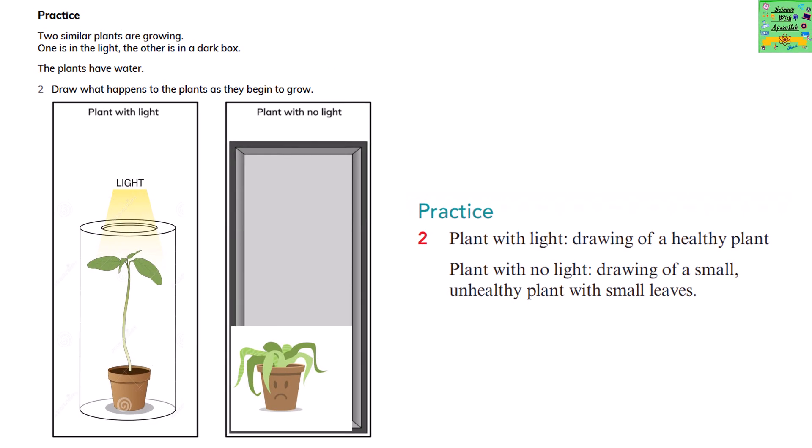Two similar plants are growing. One is in the light and the other one is in the dark box. The plants have water. Draw what happens to the plants as they begin to grow. The plant with light, drawing of a healthy plant. The plant with no light has a drawing of a small, unhealthy plant with small leaves.